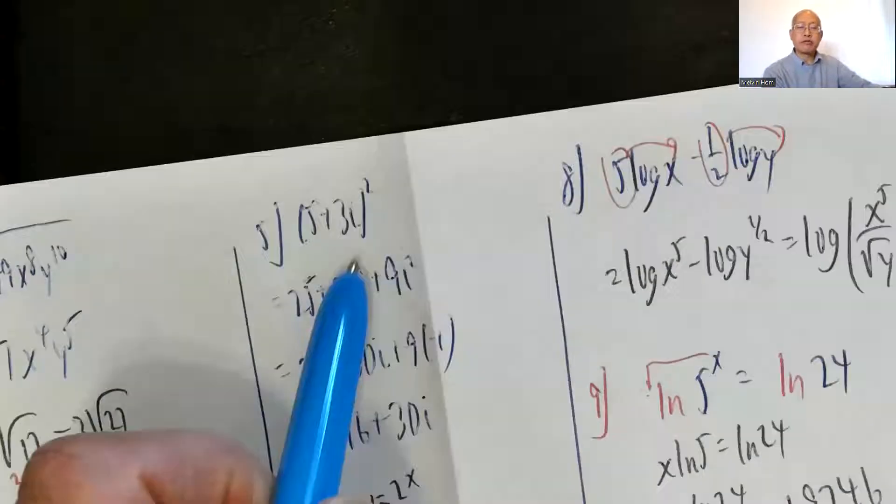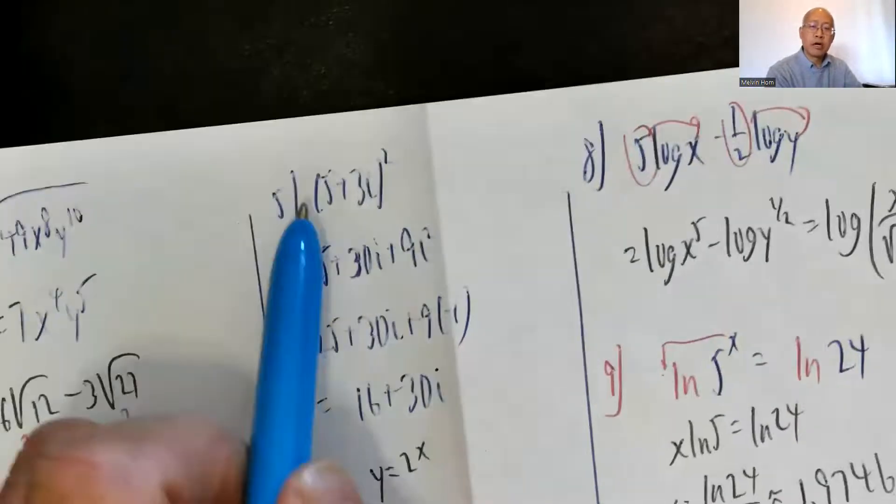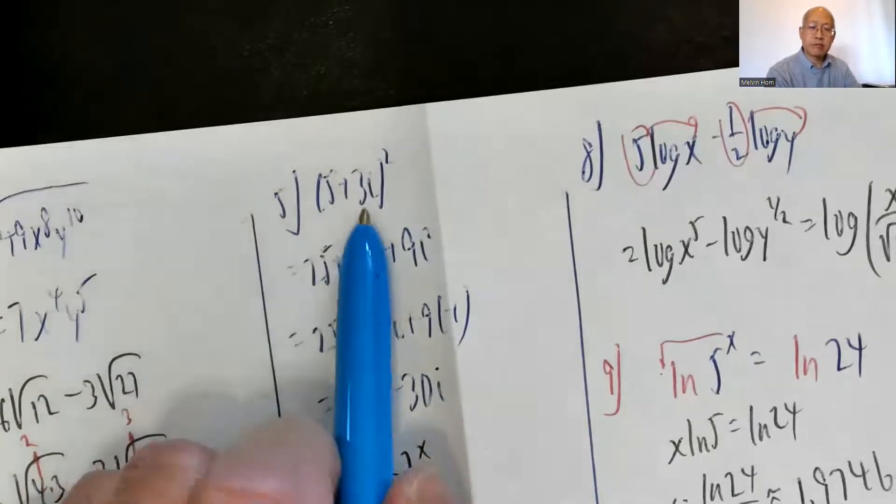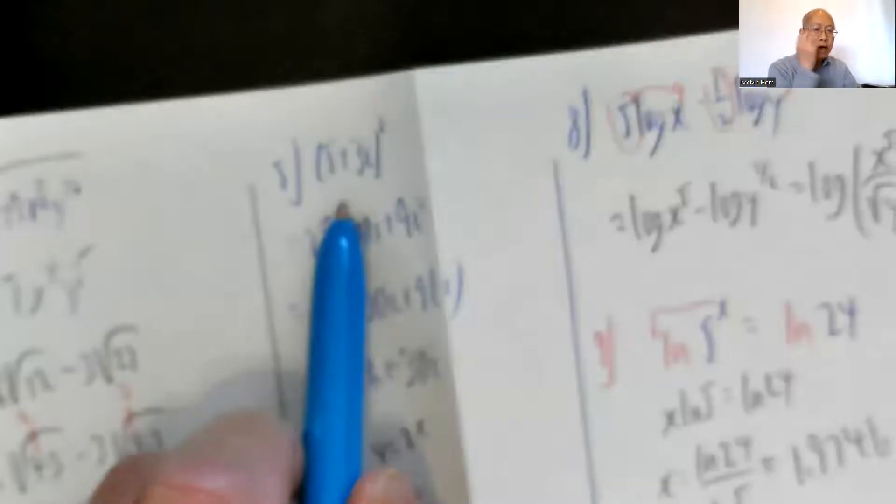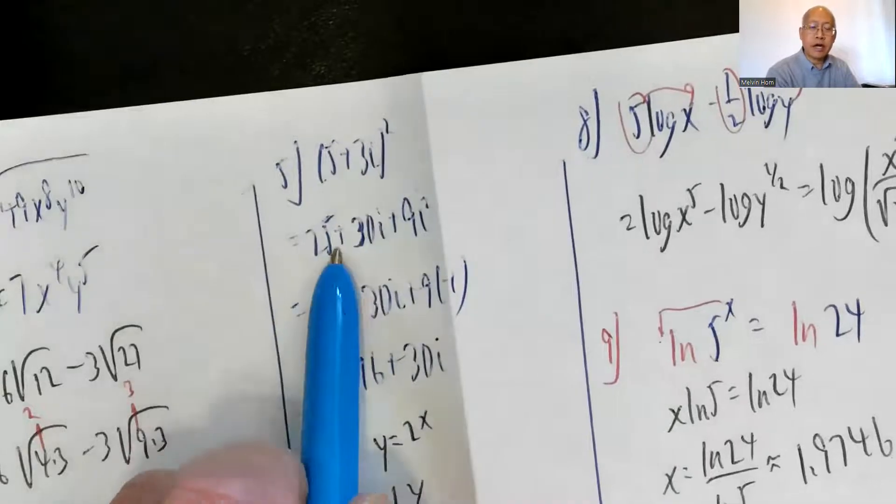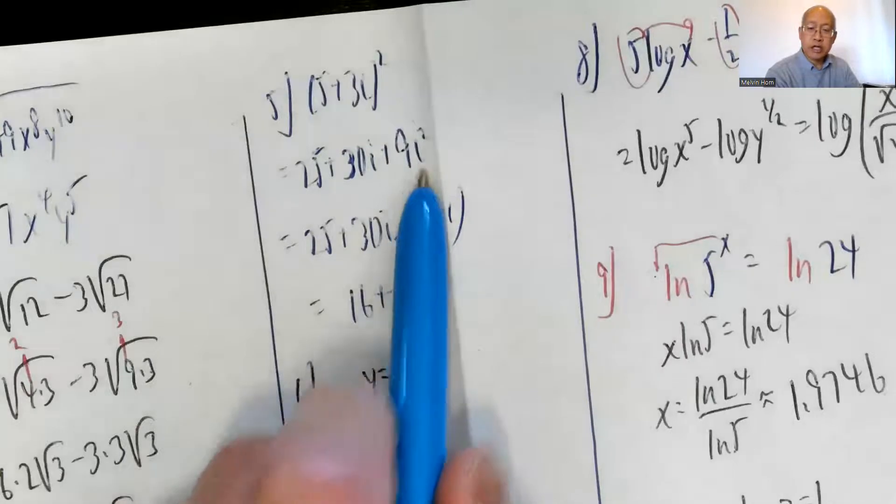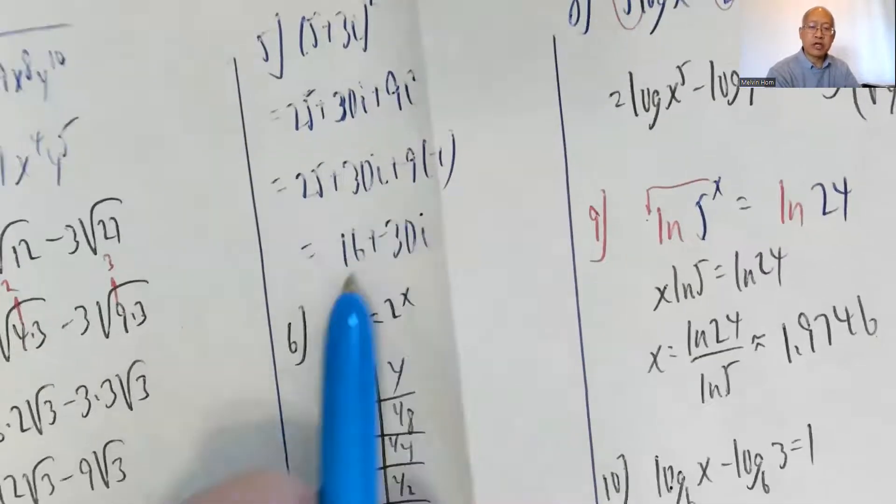Number 5: 5 plus 3i squared. Use the formula for the square of a binomial: a squared plus 2ab plus b squared. So my a squared, 5 squared is 25, plus 2ab, 2 times 5 times 3i is 30i, plus b squared is 9i squared. Whenever you see i squared, change that to a negative 1. So that's really 25 minus 9 or 16 plus 30i.